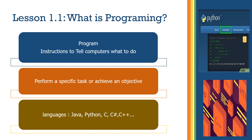A program is a set of instructions that tells the computer what to do to perform a specific task or achieve a specific objective. Examples of programming languages include Java, Python, C, C Sharp, C++, and many more.